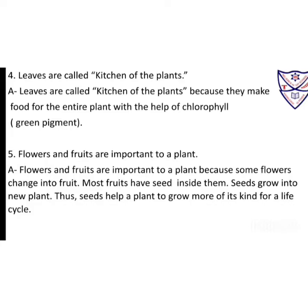Number 4: Leaves are called the kitchen of the plants. Answer: Leaves are called the kitchen of the plants because they make food for the entire plant with the help of chlorophyll or green pigment.